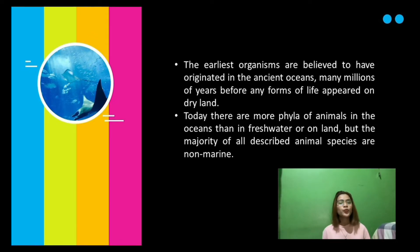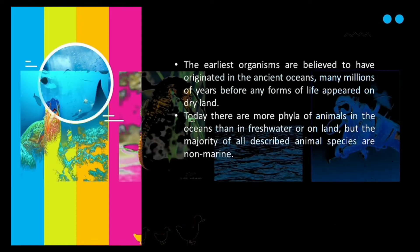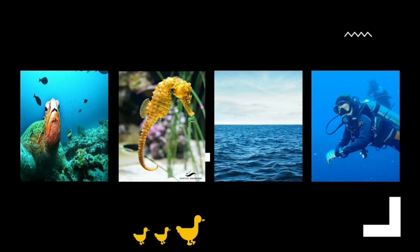All known phyla, both extinct and extant, originated in the sea, although some later migrated into freshwater or terrestrial environments. Today there are more phyla of animals in the oceans than in freshwater or on land, but the majority of all described animal species are non-marine. The difference in the number of species is believed to be largely due to the greater variety of habitats on land.